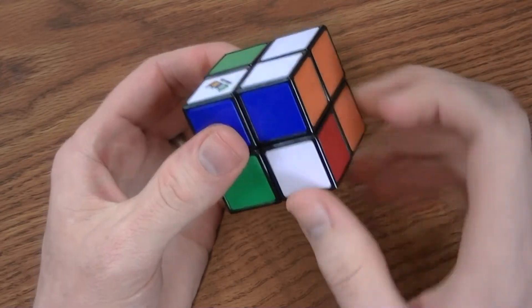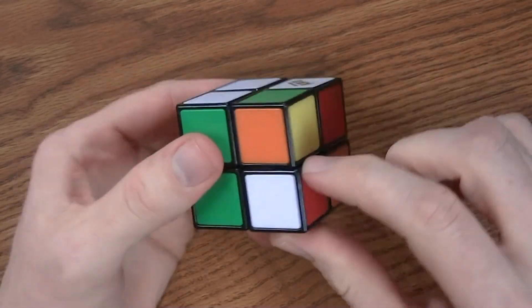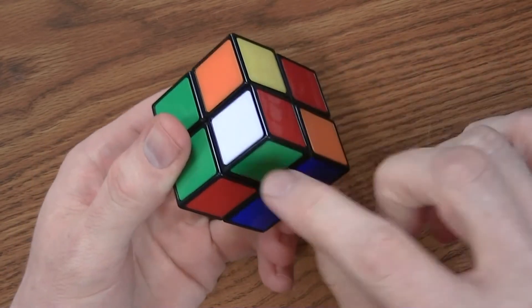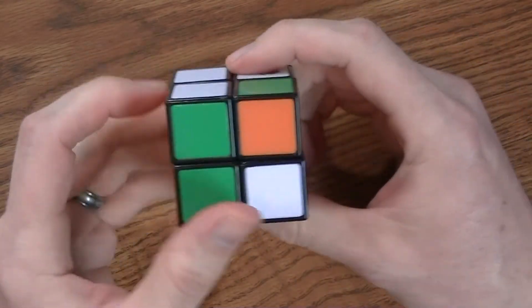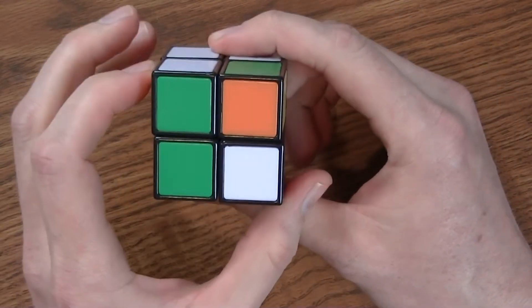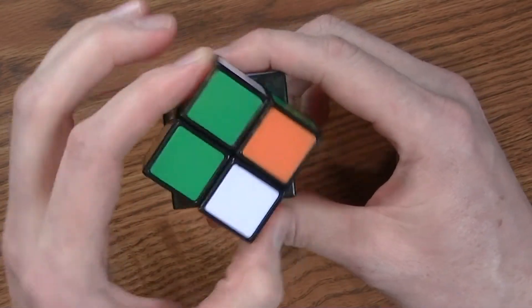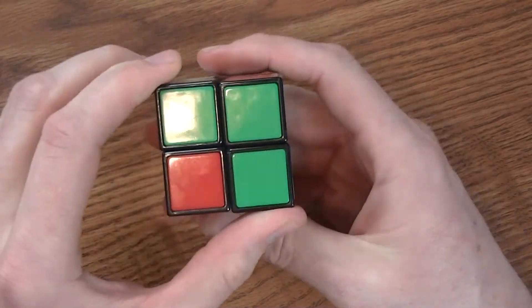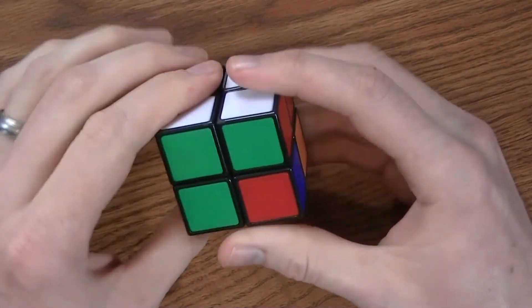I'm going to do the same thing with this piece, but first I have to twist it so that it's directly under where it needs to go. Notice this is the white, red, and green, so it's going to go right between those two. And I'm going to do the same move, only in this way it's kind of the reverse of that, because I turn the face clockwise, then I turn the bottom clockwise, and then the face counterclockwise. And that will bring that to there.